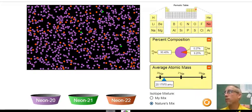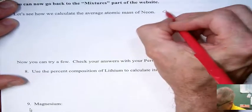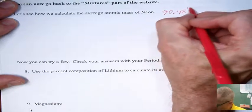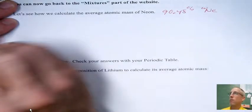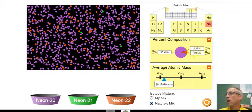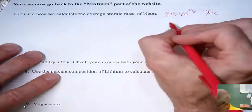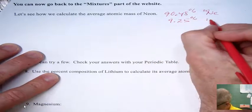So I'll be toggling back and forth between this page and the notes page. First thing we want to see is that 90.48 percent is neon 20. So I'm just going to make a list here. 90.48 percent is neon 20. Remember, we write a little mass number up here in the corner. And another 9.25 percent is neon 22.